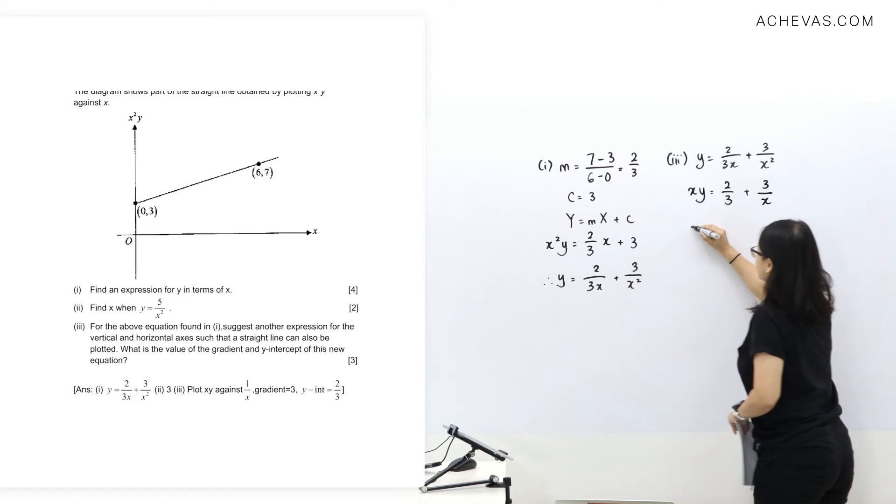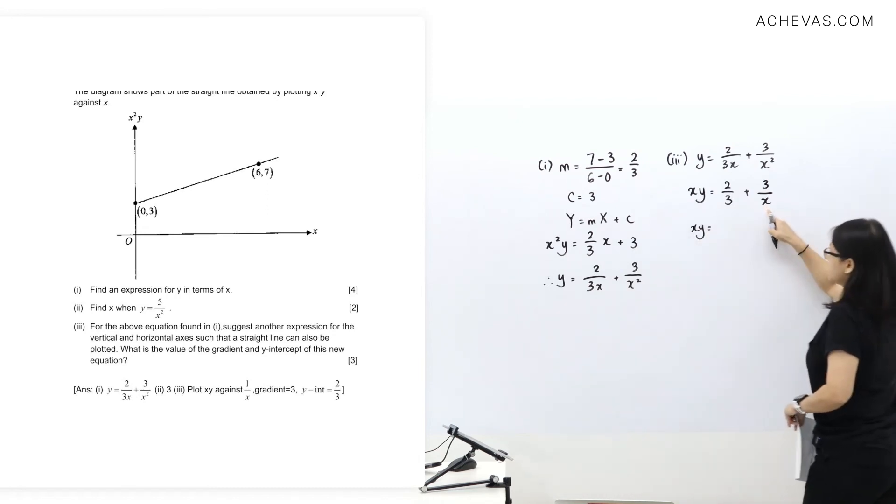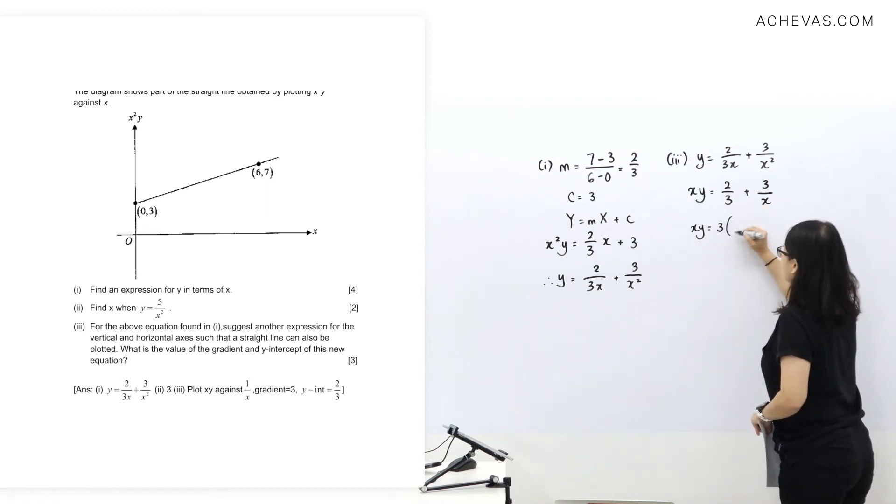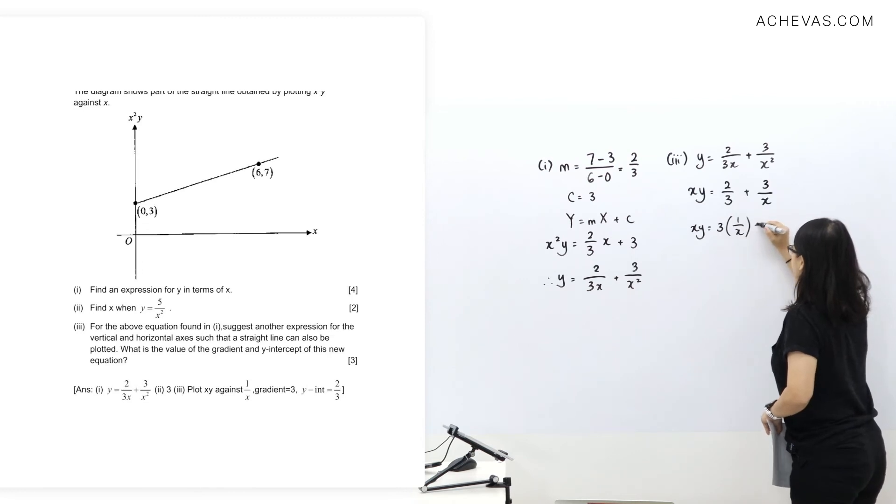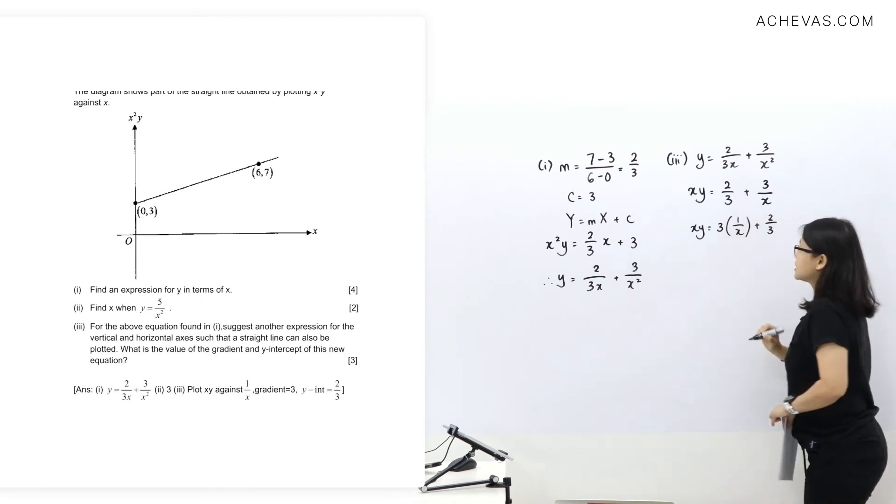So rewrite this one. I'm going to split this and write 3 times 1 over x plus 2 over 3.